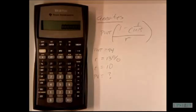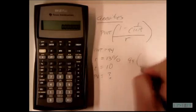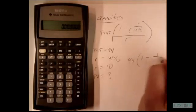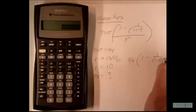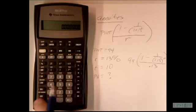So we can substitute and solve all this stuff in, plug all this stuff into the equation here. We have 1 minus 1 over 1.13 to the 10th power divided by 0.13, and we can do the math here.